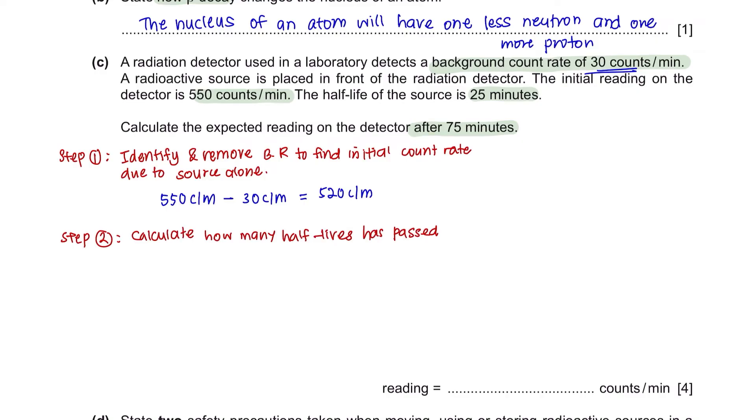And your step 2 should be to calculate how many half-lives has passed. It mentions here that half-life is 25 minutes and they're looking for the reading after 75 minutes. So 75 minutes divided by 25 minutes tells us that 3 half-lives has passed.